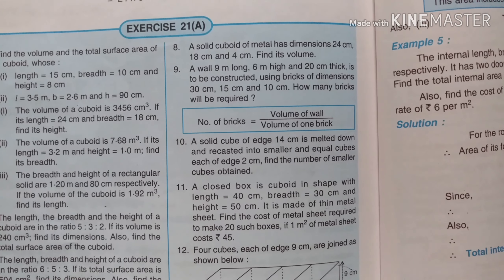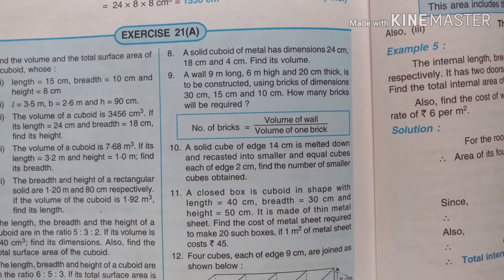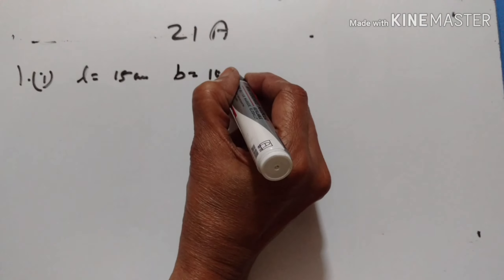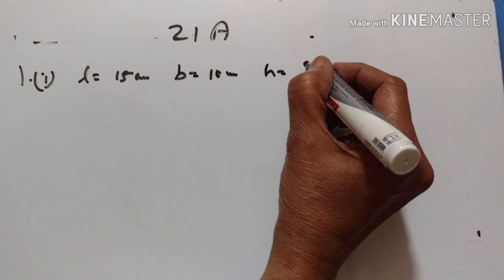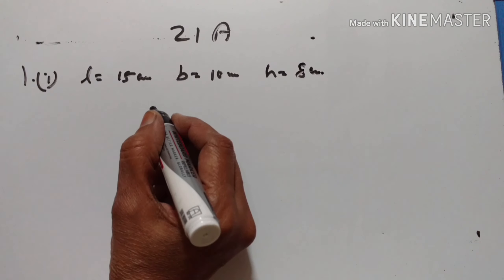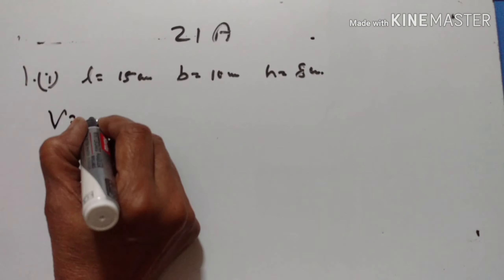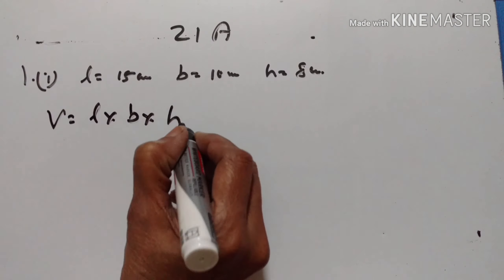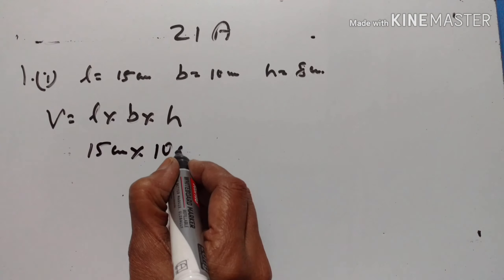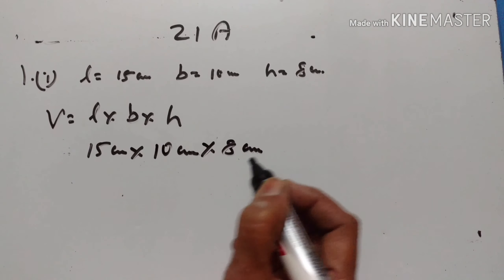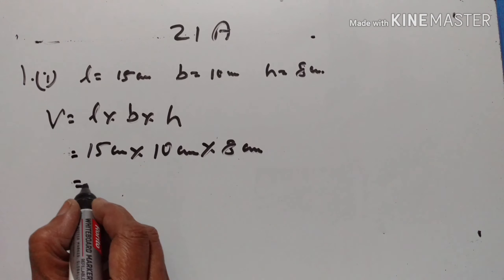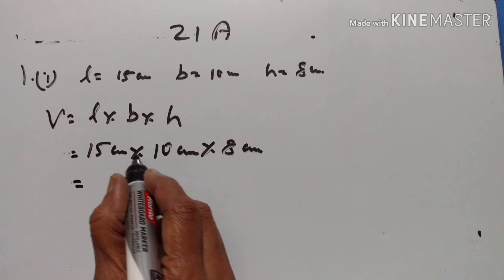The cuboid has length = 15 cm, breadth = 10 cm, and height = 8 cm. We have to find the volume and total surface area. Volume = length × breadth × height = 15 × 10 × 8 = 1200.